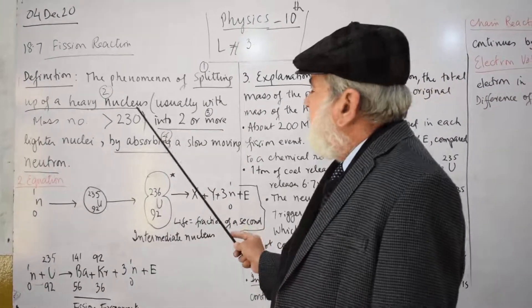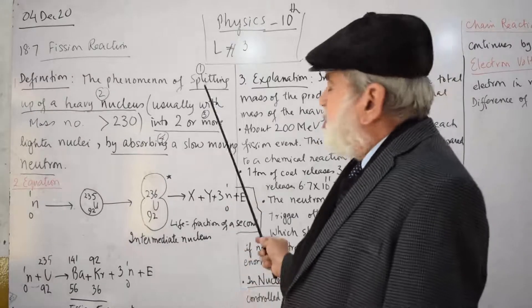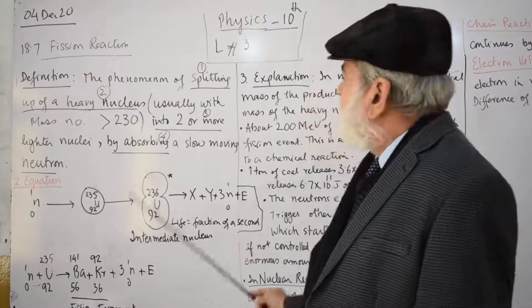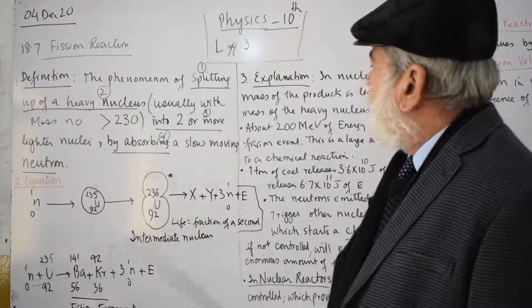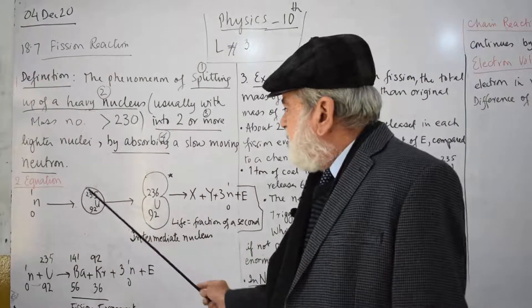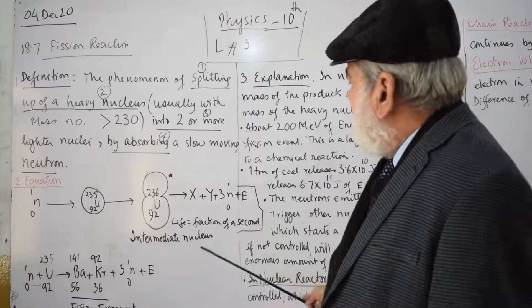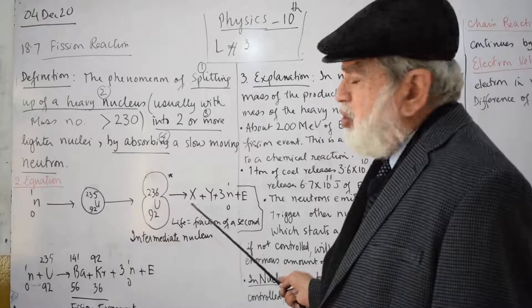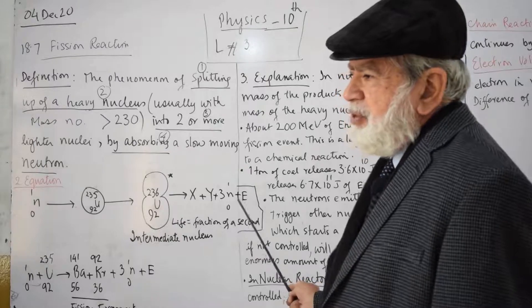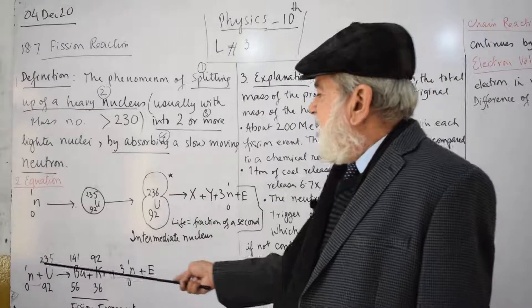A heavy nucleus splits up into lighter nuclei by absorbing a slow moving neutron. Equation: Uranium-235 plus neutron becomes intermediate nucleus, and two daughter nuclei are formed plus three neutrons plus energy. Example: Uranium-235 absorbs one neutron, Barium-141 and Krypton-92 are formed.